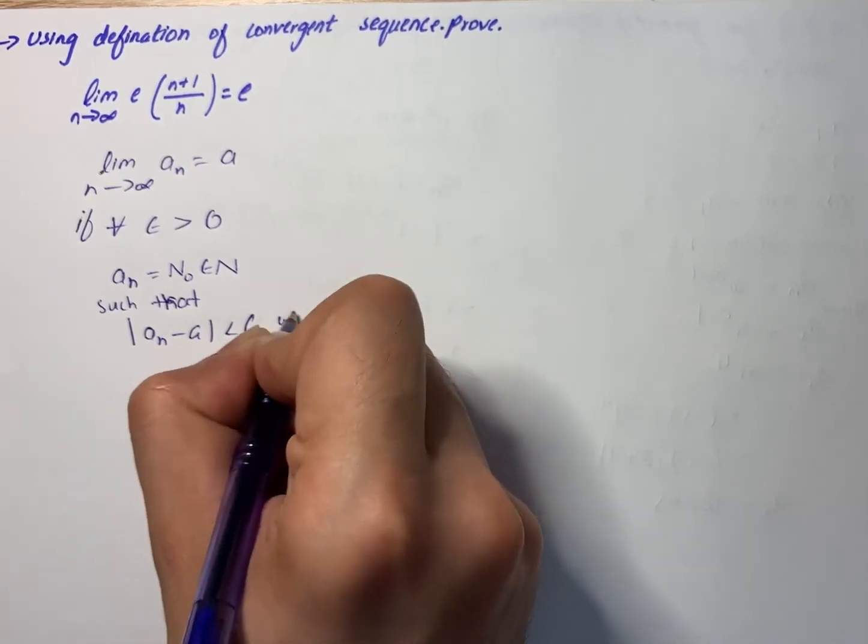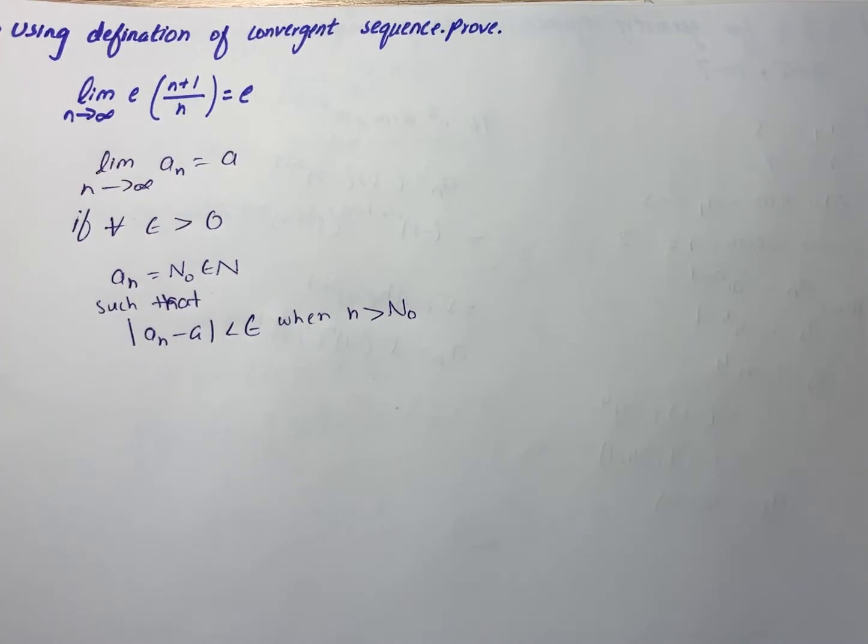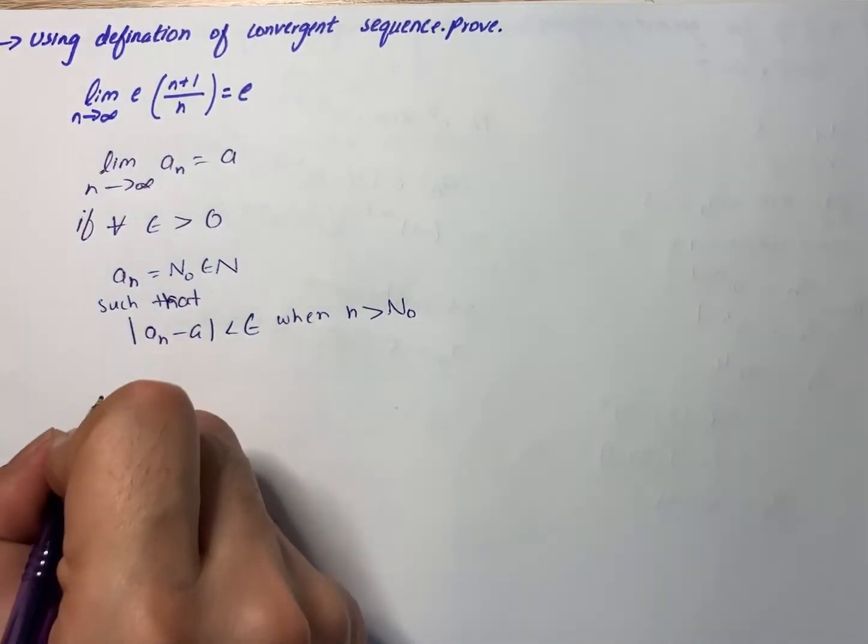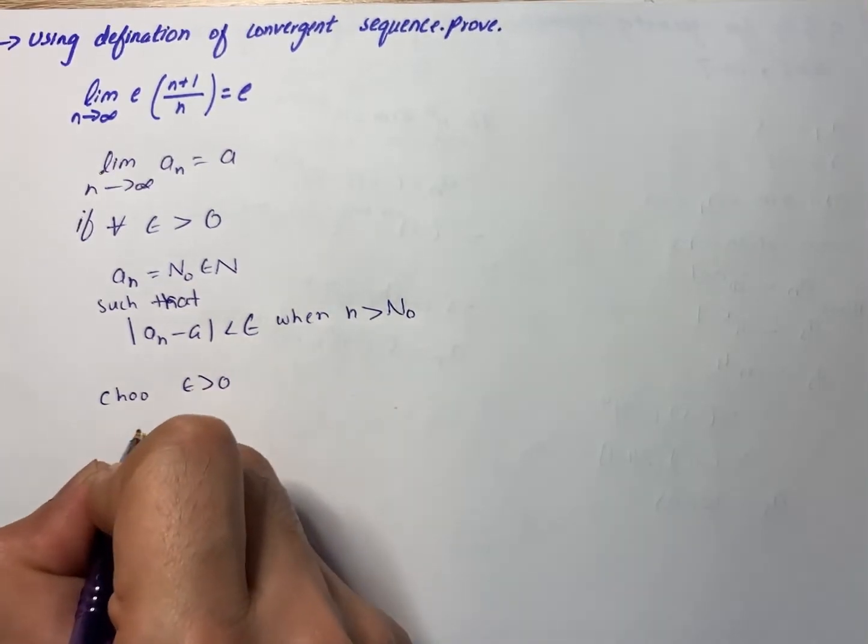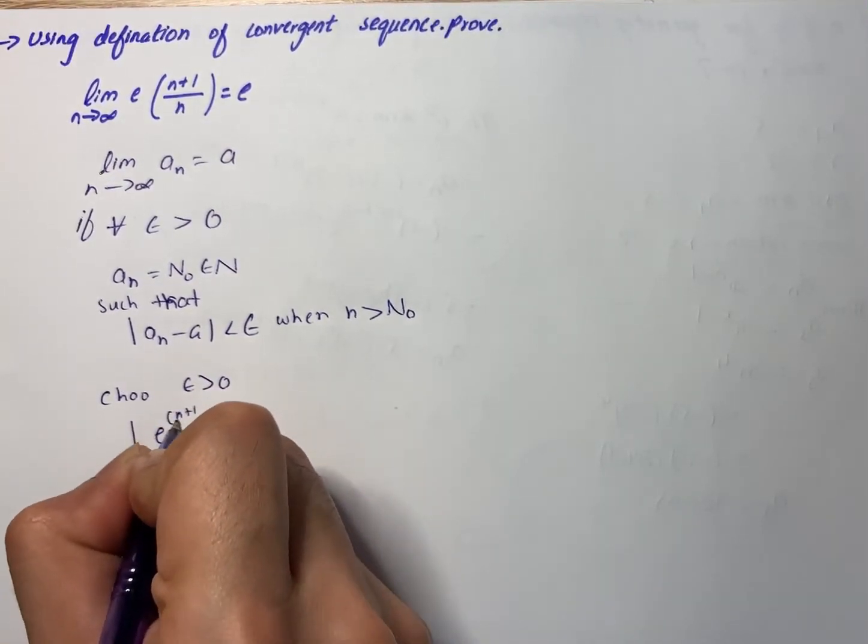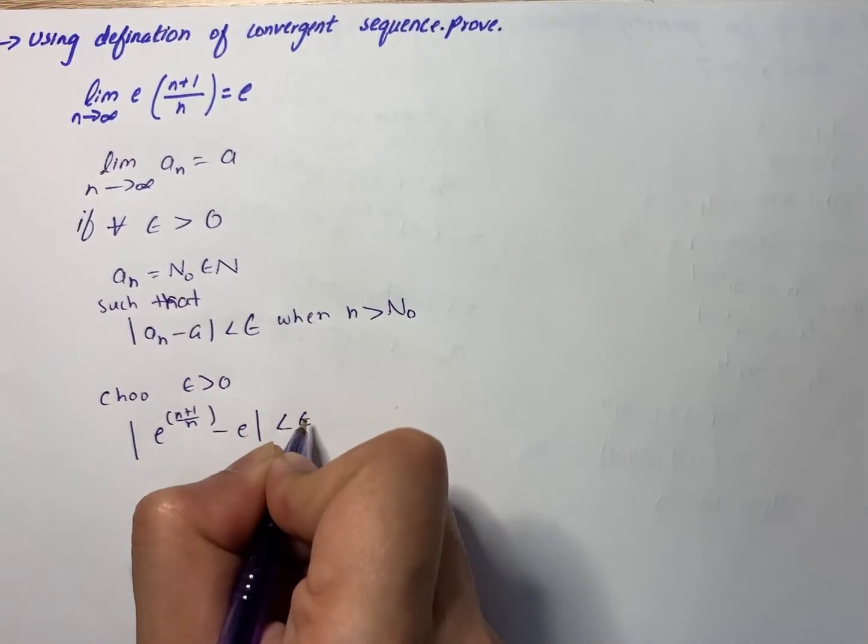Less than epsilon when n is greater than n_0. So we will choose epsilon greater than 0. We have |e^((n+1)/n) - e| less than epsilon.